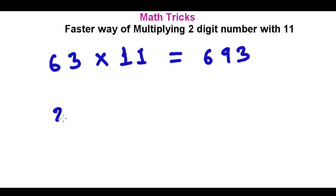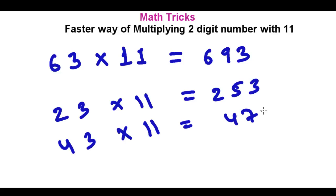You give me any number. Let's say you give me 23 times 11. How much is it? 23 times 11 is 2, 5, 3. You give me anything. Let's say 43. 43 times 11, 4, 7, 3.